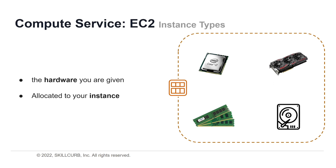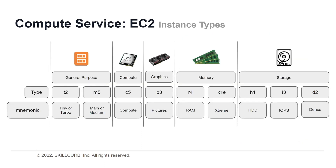There are a bunch of families you'll find when it comes to instance types on AWS. You'll see T2, which is tiny or turbo; M5, which is main or medium; C5 for compute; P3 for pictures; R4 for RAM; X1E for extreme; H1 for hard drives; I3 for IOPS; and D2 for dense.